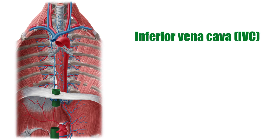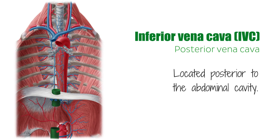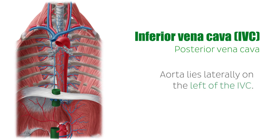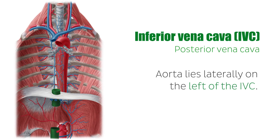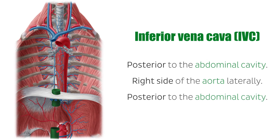Also known as the posterior vena cava, it is a large diameter vein that is located posterior to the abdominal cavity and runs alongside the right side of the vertebral column, thus making it a retroperitoneal structure. The aorta lies laterally on the left of the IVC. To review: the IVC is posterior to the abdominal cavity, it is on the right side of the aorta laterally, and it is a retroperitoneal structure.